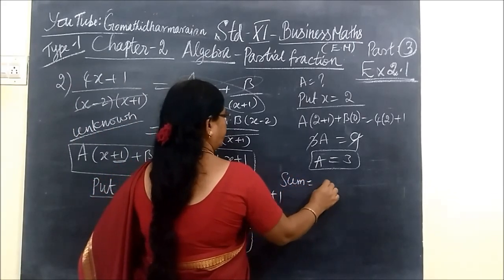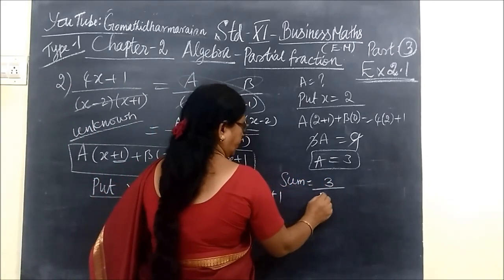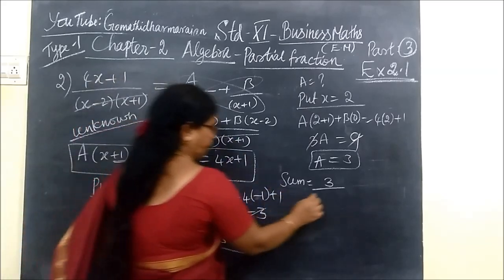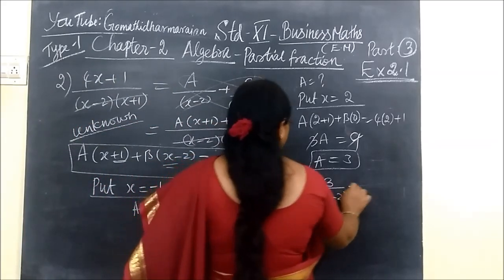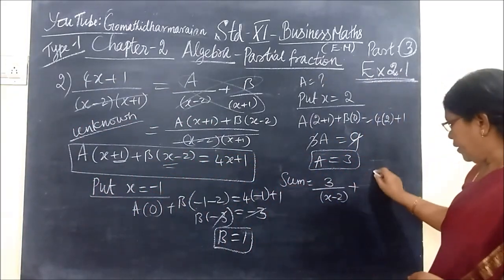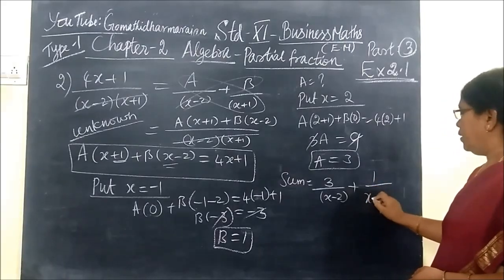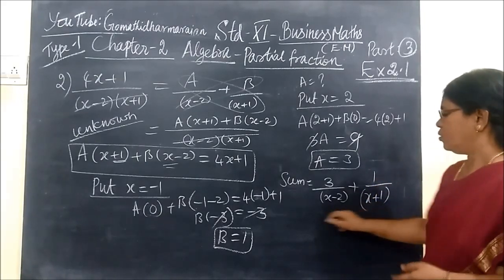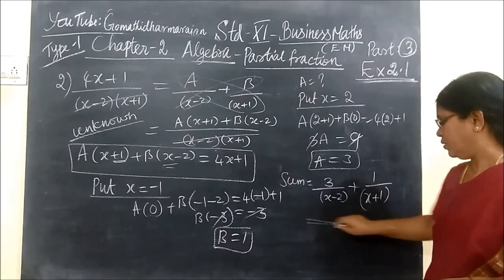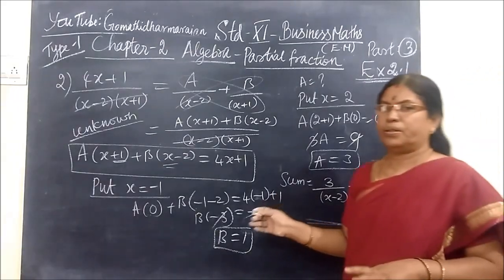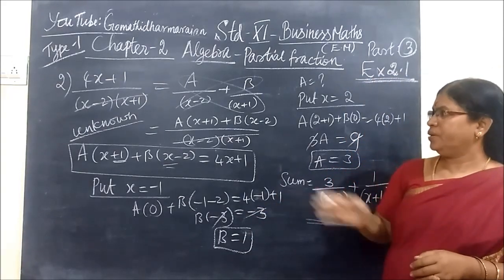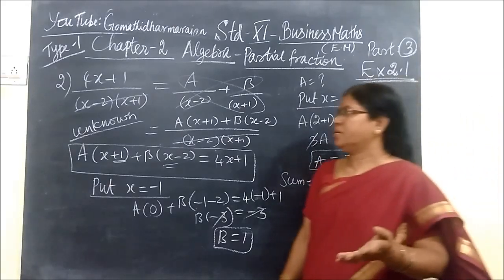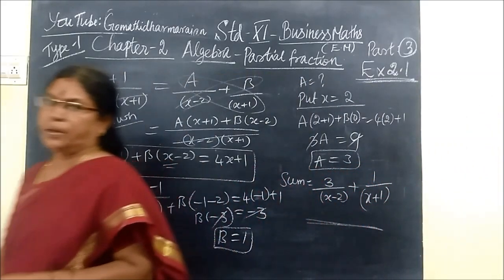Now you write the partial fraction. Therefore sum equal to A is 3, so 3 by x minus 2, plus what is the value of B, 1 by x plus 1. This is so easier, easy sums. This is the third sum we do in the next class. Thank you.